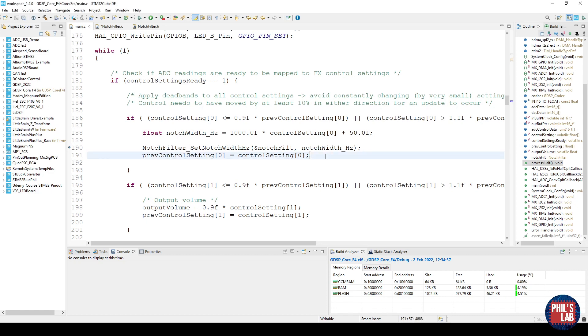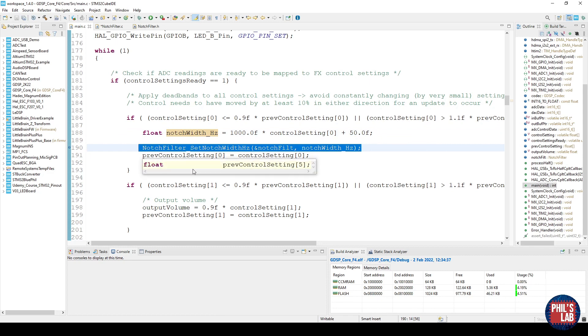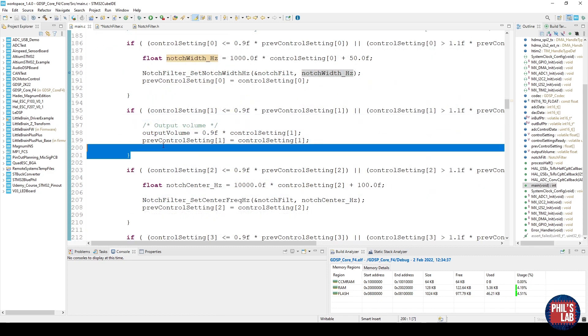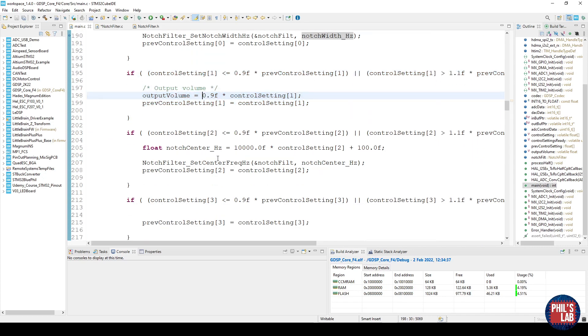So one of my potentiometers is to set the notch width. My control setting goes between 0 and 1 effectively so I go from 50 up to 1050 as my notch width and of course you can make this however you want. Then I simply call my set notch width update function and that's all there is to it.